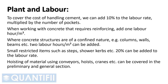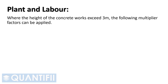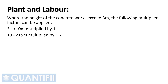Hoisting of material using conveyors, hoists, cranes, etc., can be covered in the preliminary and general section. Where the height of the concrete works exceed 3 meters, the following multiplier factors can be applied: 3 to less than 10 meters, multiplied by 1.1; 10 to less than 15 meters, multiplied by 1.2. Add 0.1 for every additional 5 meters.